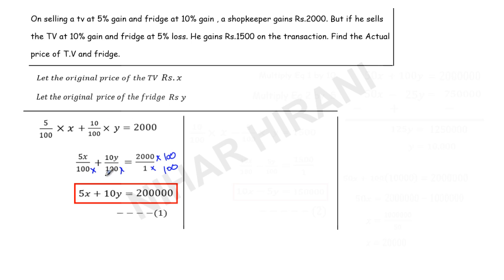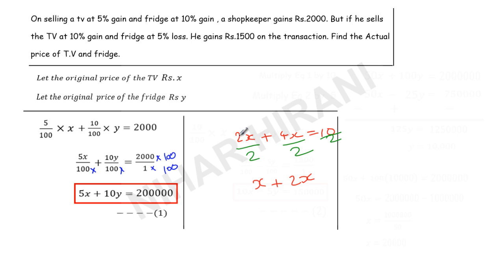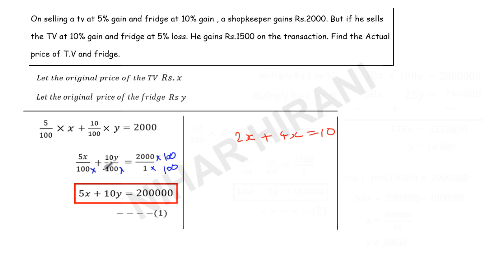Some students wonder where the denominator went. To clarify: if I have 2x plus 4x equals 10 and divide everything by 2, I get x plus 2x equals 5 — no need to write the denominator anymore because I simplified it. Here, since 100 appears in the denominator of all terms, taking LCM and dividing through by 100 eliminates it.